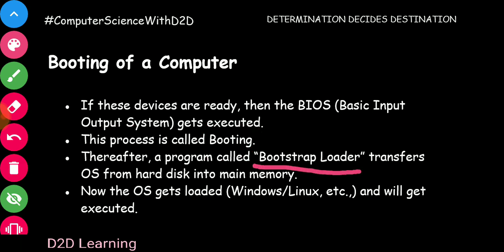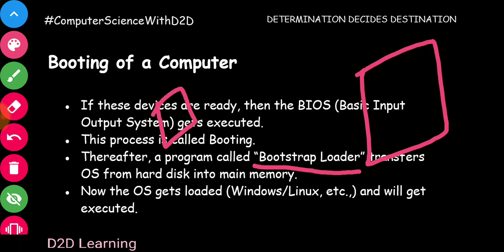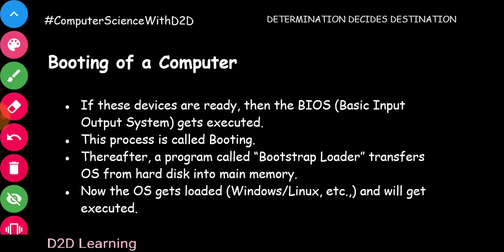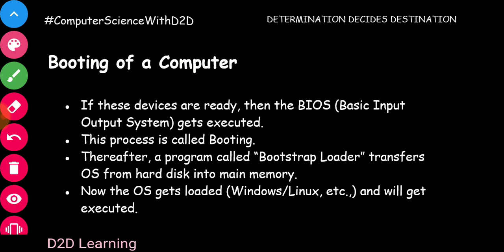What is the bootstrap loader? The OS is transferred to the main memory. You can use the hard disk as storage memory. The bootstrap loader is stored in ROM. After it runs, the bootstrap loader will load the OS — so OS is like Windows, Linux, or Unix — into main memory.